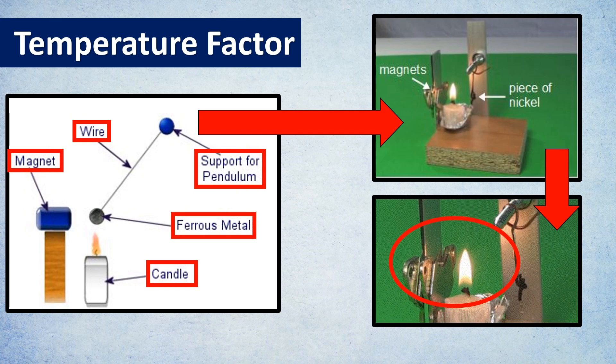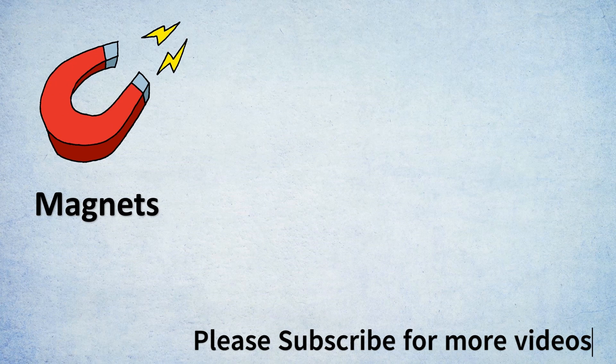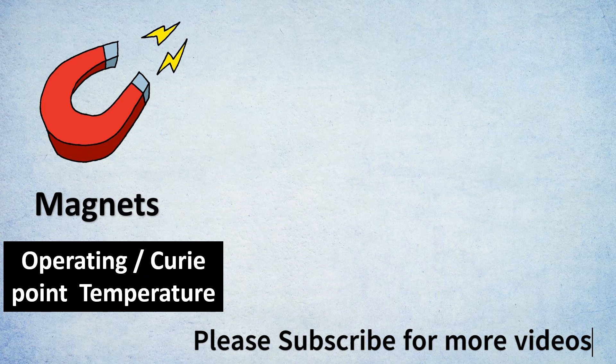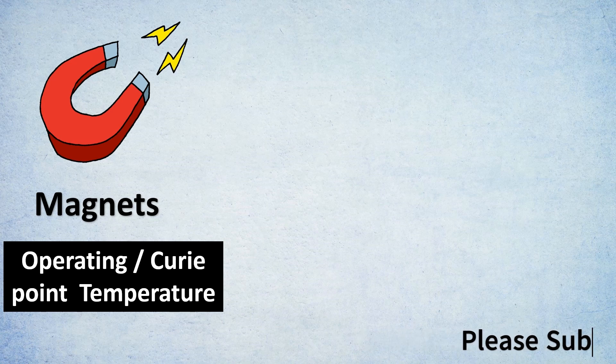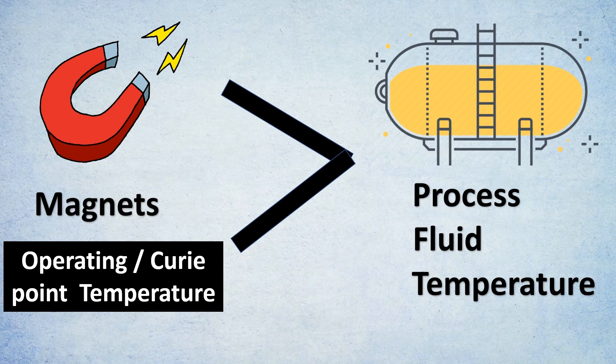Let's discover what happens here. Magnets have a particular temperature above which they will stop to behave as a magnet itself. That is called the Curie point temperature. Every magnet has to have an operating temperature; above it its magnetic properties will reduce. This temperature has to be always greater than your process fluid temperature. Care must be taken to ask every vendor whenever they're giving a magnet. Higher quality magnets can sustain higher temperatures.